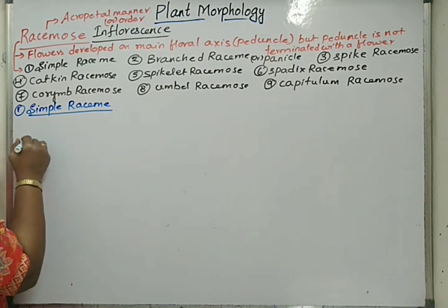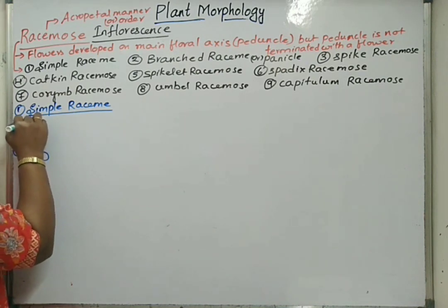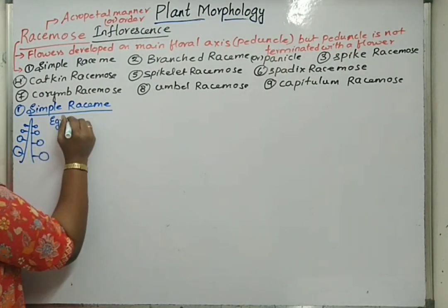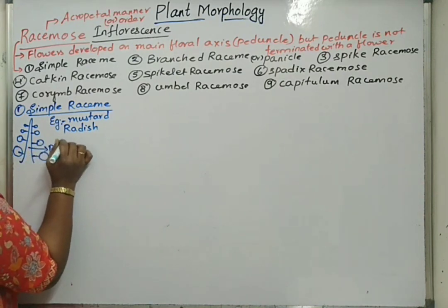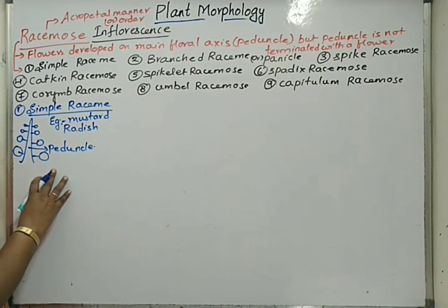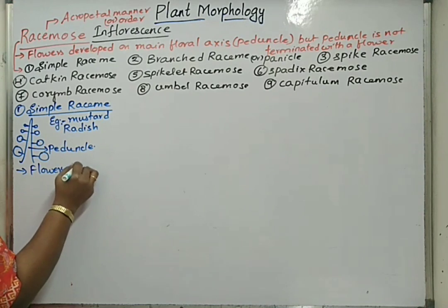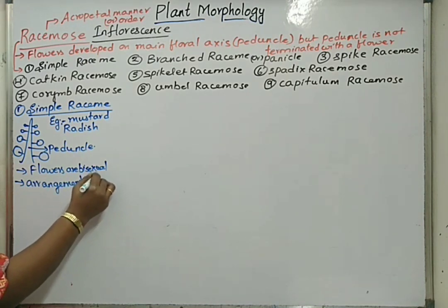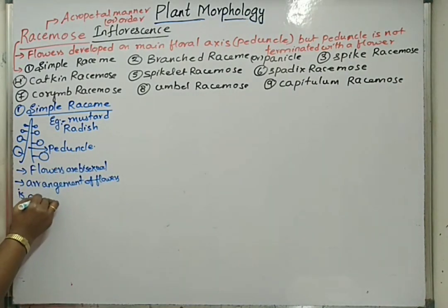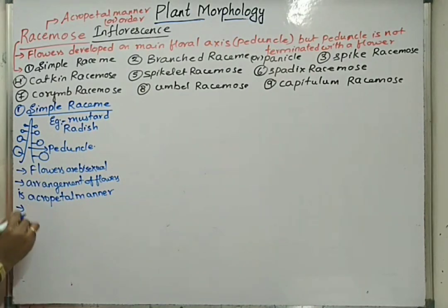Under simple raceme, we see one single main axis with flowers on it. We see such acropetal arrangement in case of mustard, radish, etc. This main floral axis is called the peduncle. Some important points required for MCQs: flowers are bisexual, arrangement of flowers is in acropetal manner, and type of branching is monopodial branching.